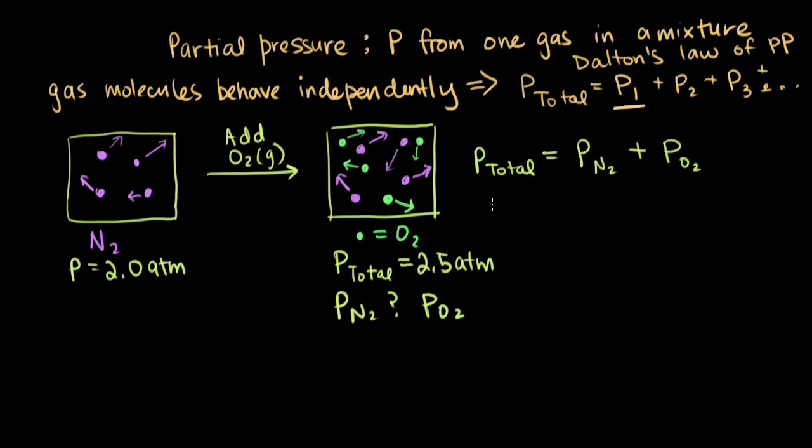We actually know the partial pressure for nitrogen. The partial pressure for nitrogen is actually 2.0 atmospheres. It doesn't actually change here. So partial pressure of nitrogen is still 2.0 atmospheres, even though we added oxygen gas. And the reason why that is is because the ideal gas law says PV equals nRT.